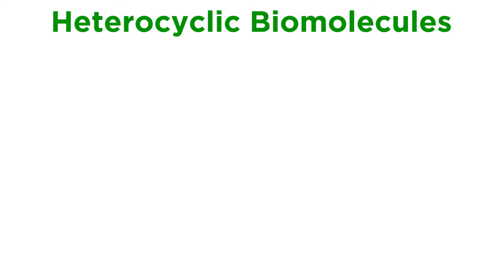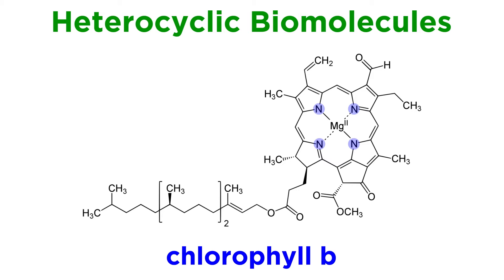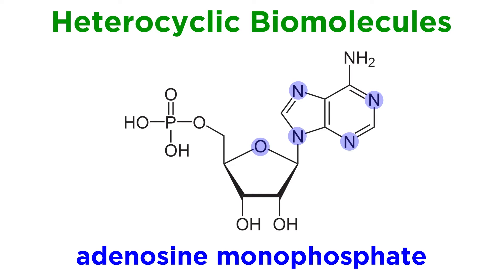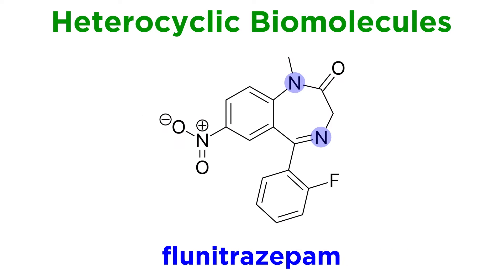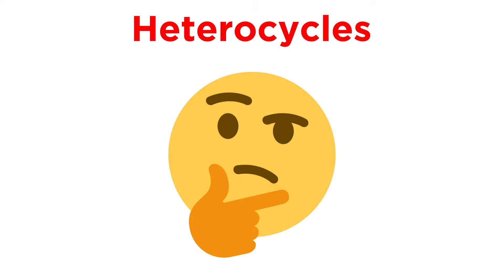Heterocycles are extremely common amongst biomolecules of all varieties. Consider chlorophyll B, the essential catalyst for photosynthesis in plants, or the nitrogenous bases as well as carbohydrate units in DNA and RNA. They are also prevalent in manmade drugs, so it will definitely be in our best interest to become familiar with the main classes of heterocycles, how they are prepared, and what they do.